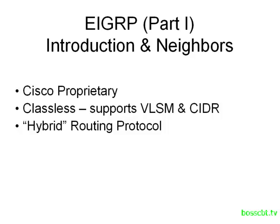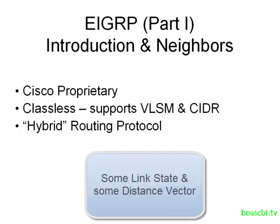EIGRP is not a distance vector routing protocol, and it's not a link state routing protocol. It's sometimes referred to as a hybrid routing protocol, and what that means is it kind of embraces some of the characteristics of each of those — it's a little bit distance vector and a little bit link state.